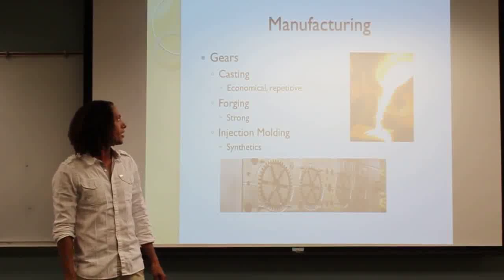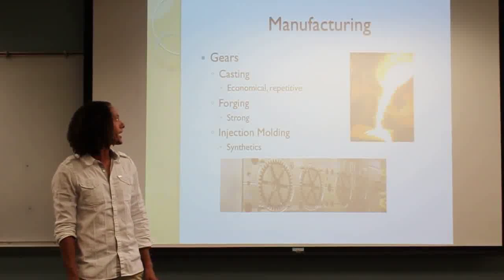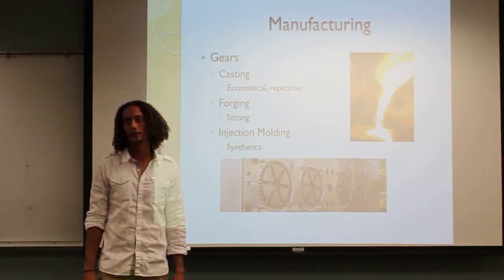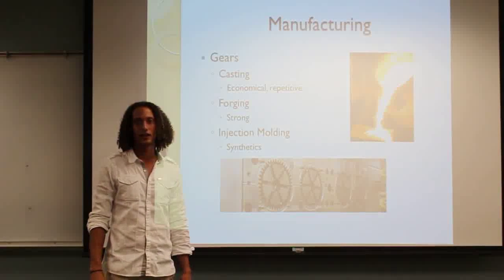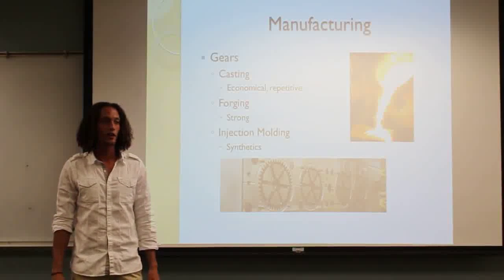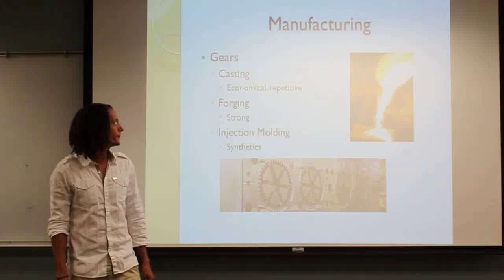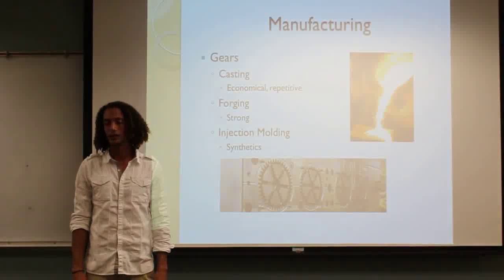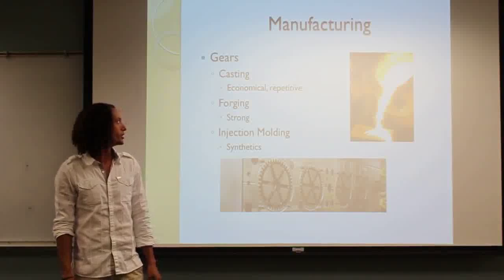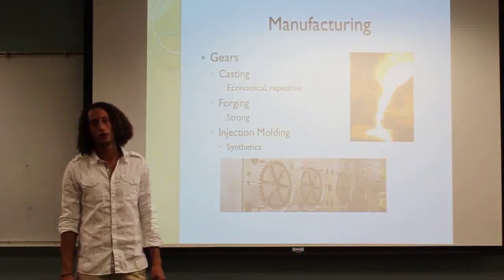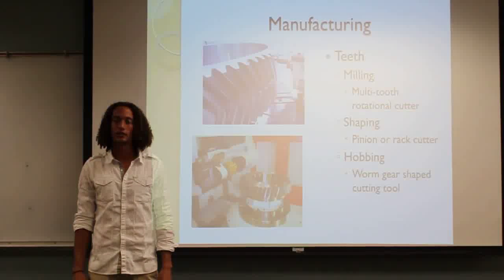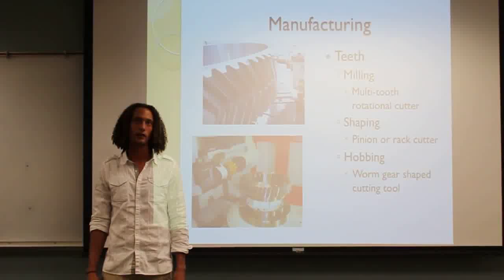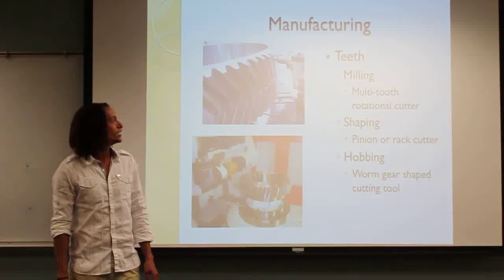Some common manufacturing techniques for gears are casting, forging, and injection molding. Casting is very economical and repetitive — manufacturers can turn out a great quantity of gears in a short amount of time. Forging is basically the strongest way to produce a gear by heat forging it. And injection molding is good for synthetics: you can inject the molten synthetic into the mold and it comes out basically a finished product with hardly any machining left to do.